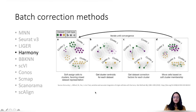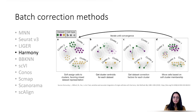A quick note: when I refer to these as batch correction methods, it does not mean they can only correct for batch effects in a literal sense. These methods handle inter-sample variation, which can occur due to differences in sequencing technology, experimental conditions, or sequencing batch effects. In this case, I am going to use Harmony not to correct for batch effects but to integrate data from different conditions.